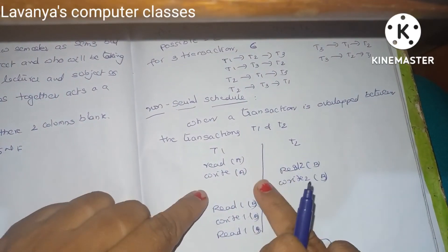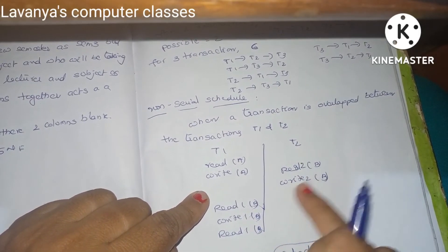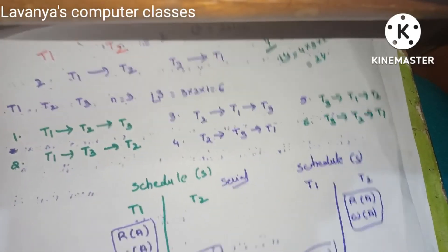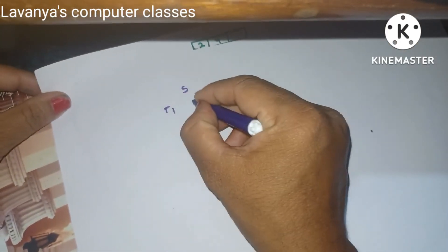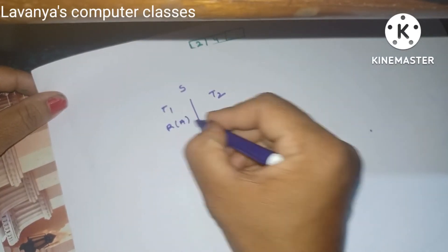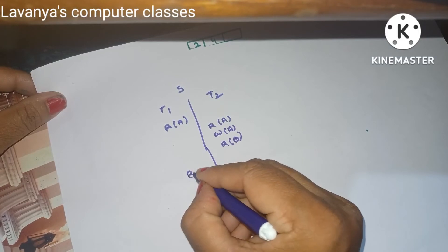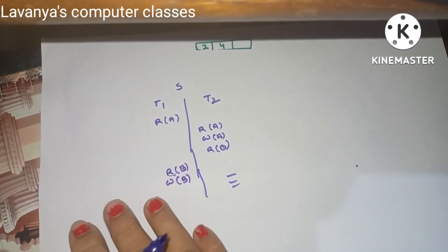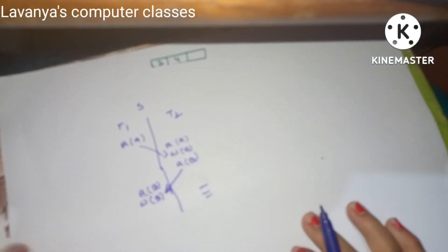In a non-serial schedule example, T1 starts with Read A and Write A, then T2 starts (Read B, Write B) without T1 completing, then T1 resumes with Read B and Write B. In schedule S, T1 and T2 interleave: Read A in T1, then Read A in T2, then Write A, then Read B in T2, then without completing T2 you jump back to T1 for Read B and Write B. This overlapping — jumping from one transaction to another without completing it — is known as non-serial or parallel scheduling.